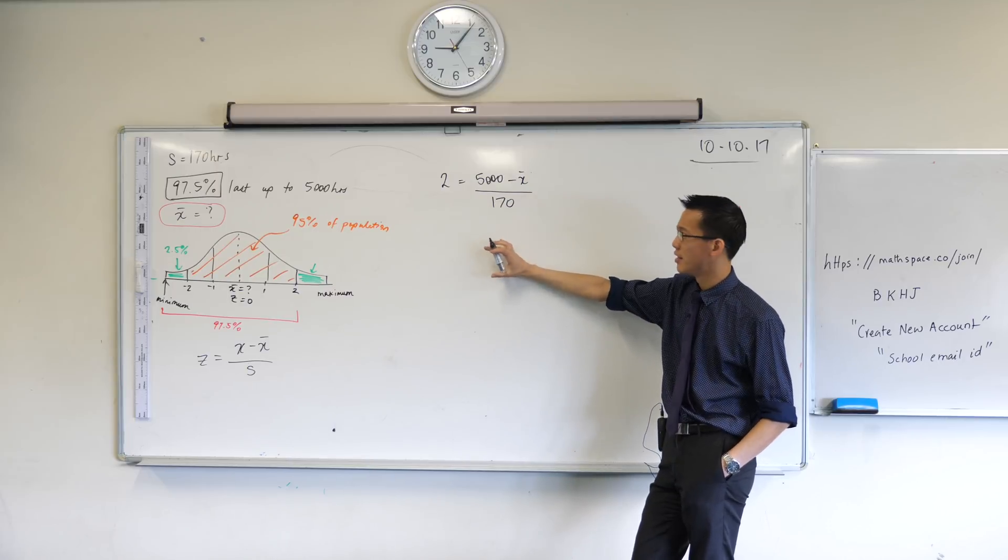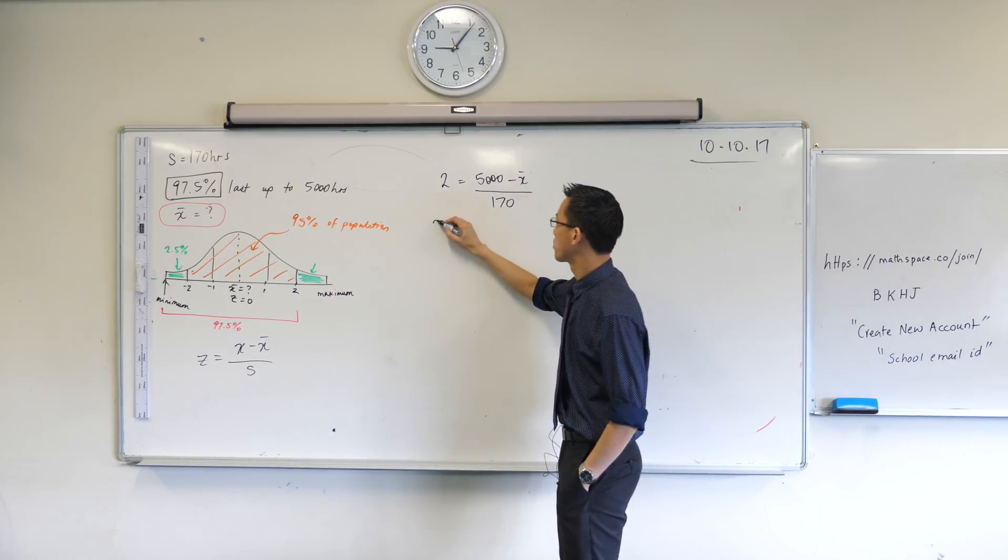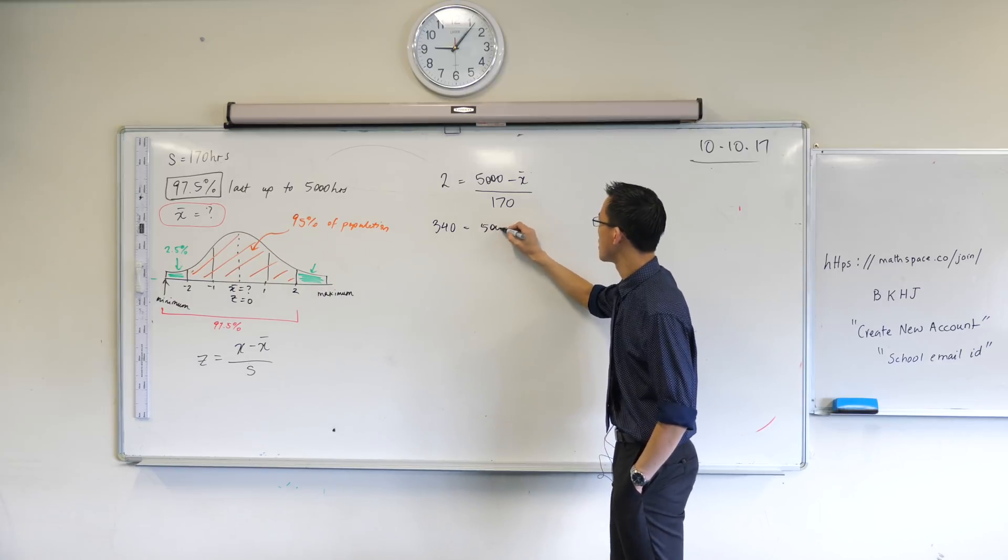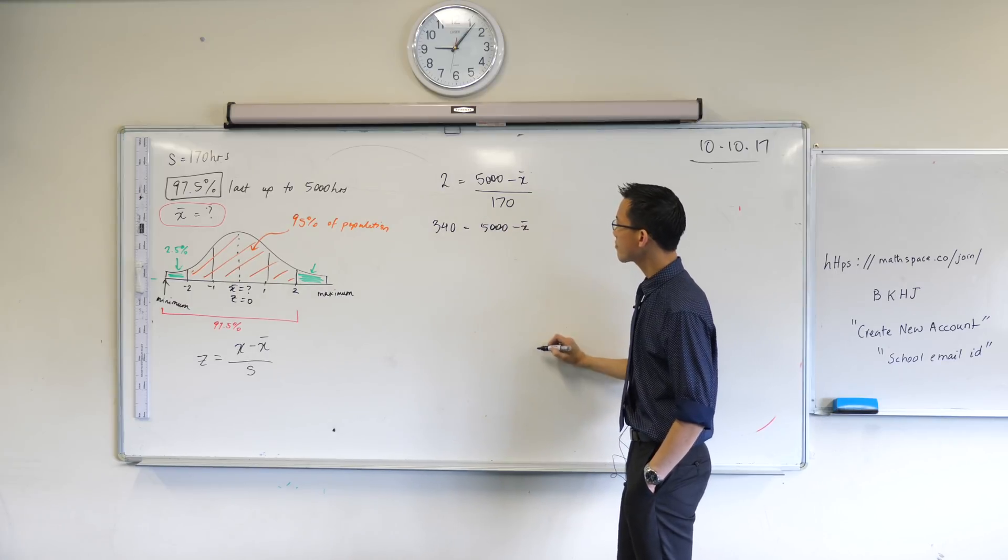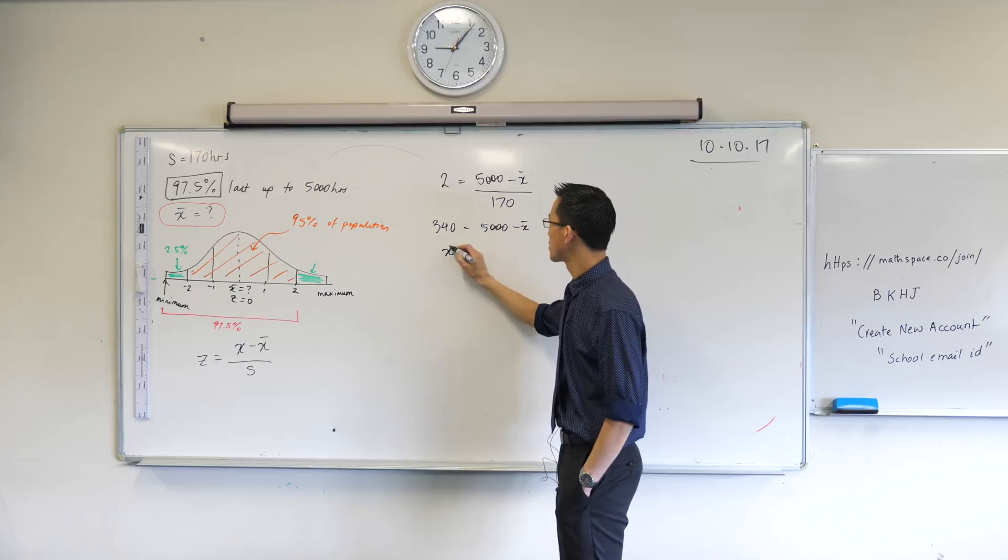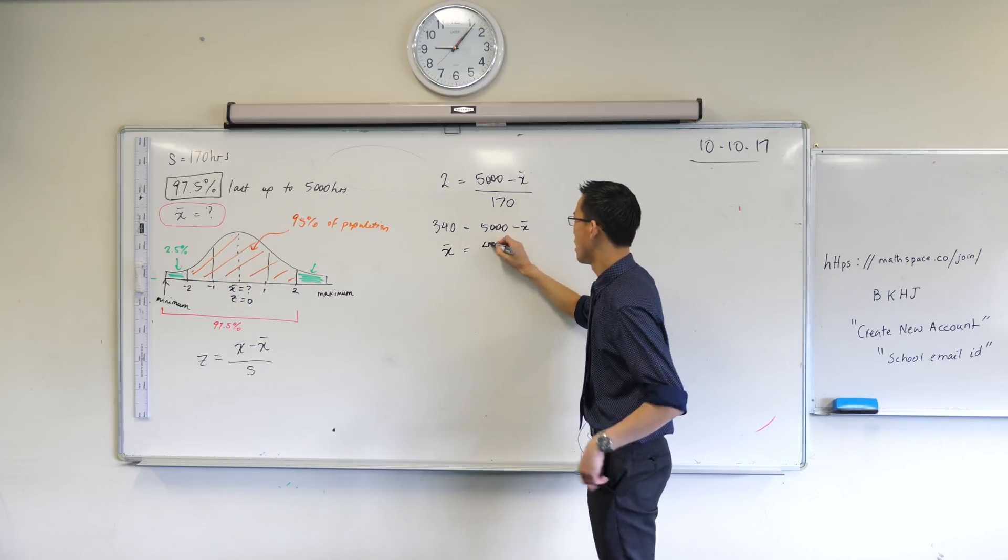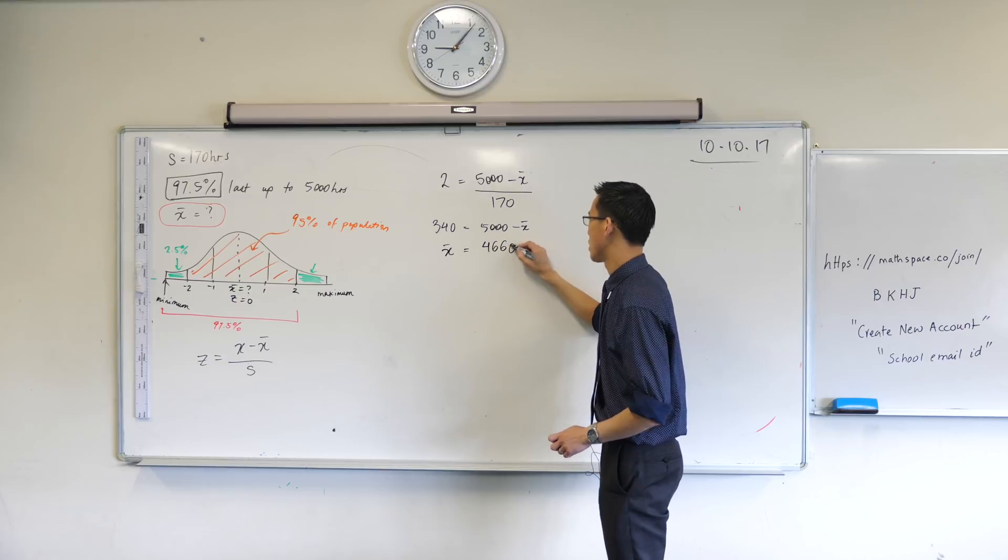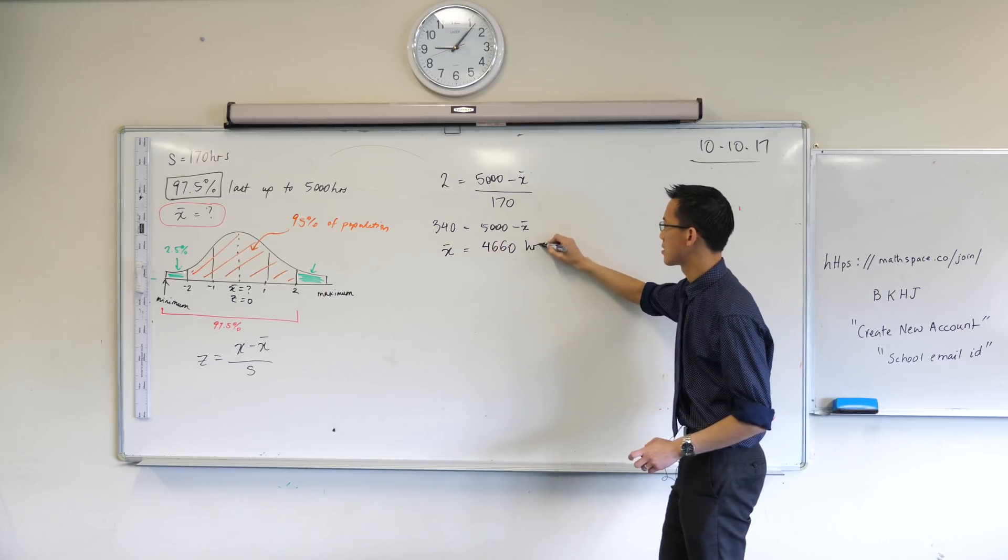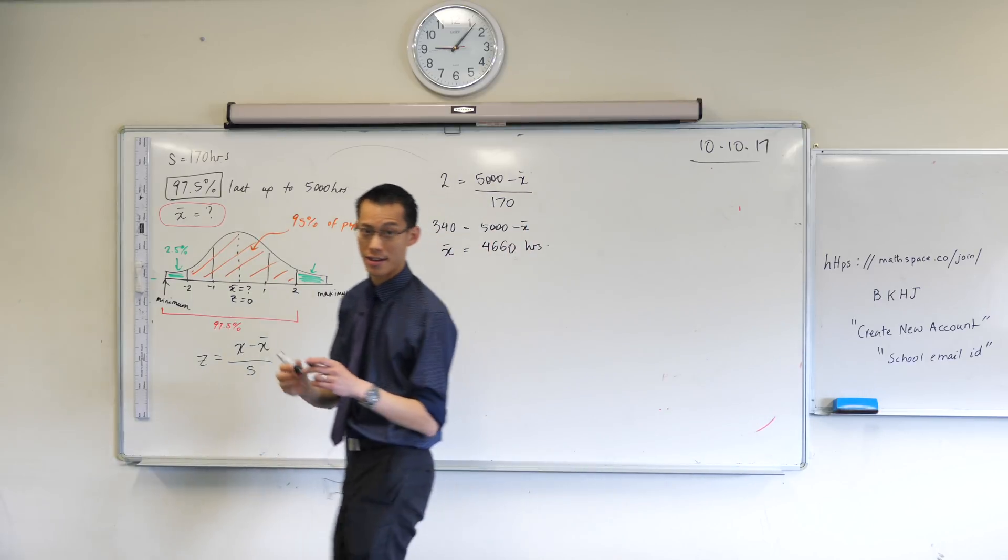I just need to rearrange this, do a little bit of algebra. I'll multiply both sides by 170, which leaves me with this. I'll add x bar to both sides, and I'll also subtract 340 from both sides, which leaves me with 4,660. That's the number of hours that it lasts.